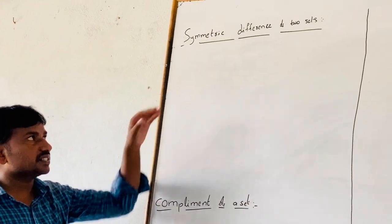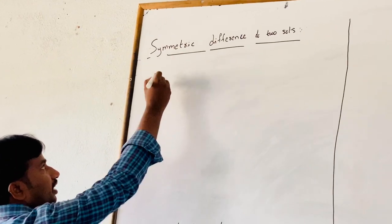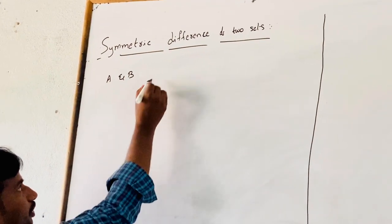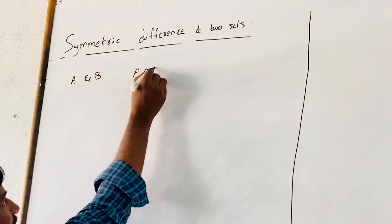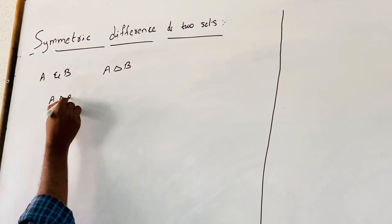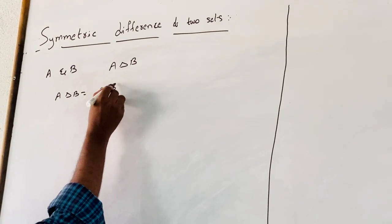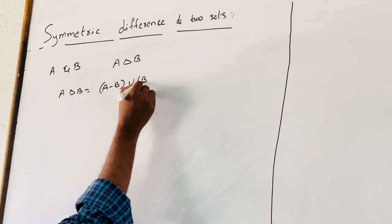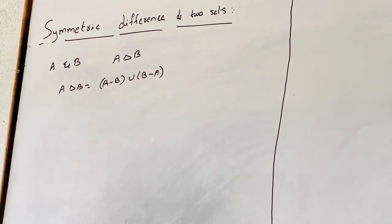The symmetric difference of two sets A and B is denoted by A delta B. A delta B is equal to A minus B union B minus A.